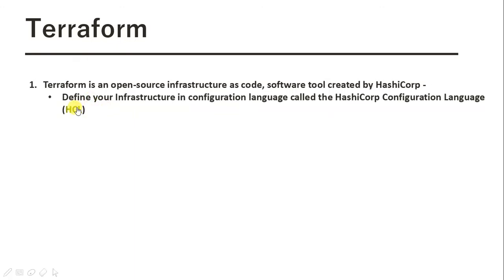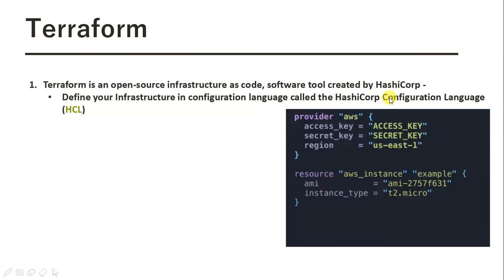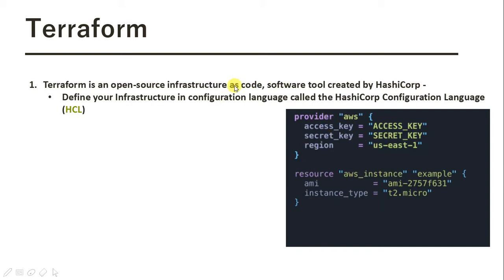Whatever resources you need to create, you define that infrastructure in a configuration language called HashiCorp Configuration Language, or HCL. Here is a basic example of how to create an EC2 instance using Terraform — this is how HCL looks. You define your resources in this way and just run the file, which will create the resources.